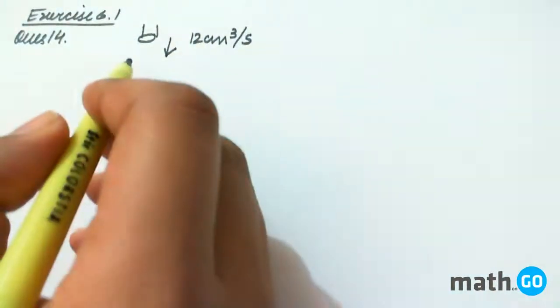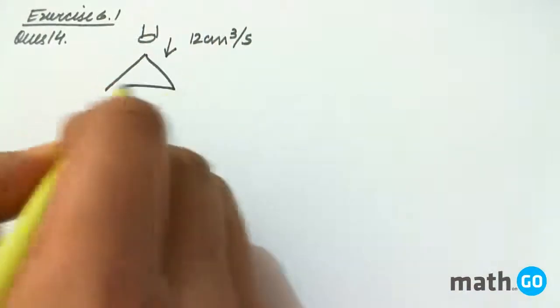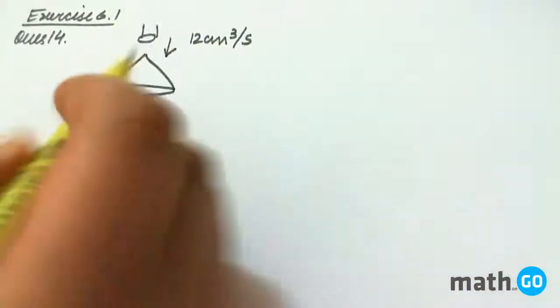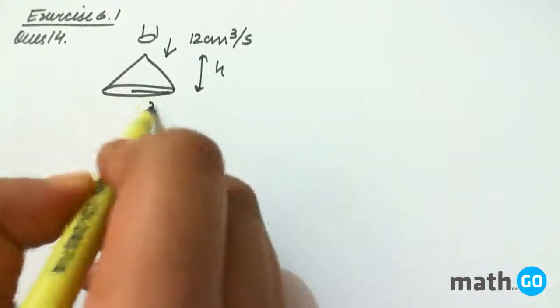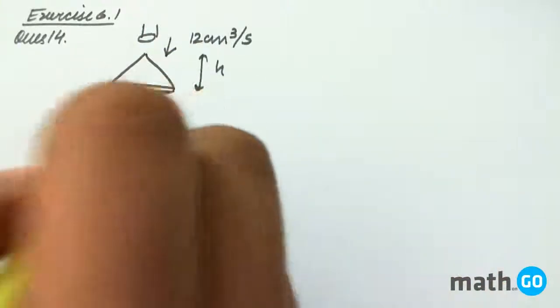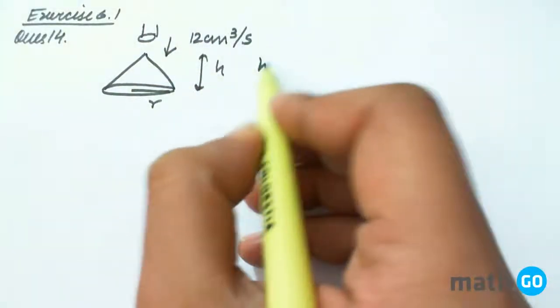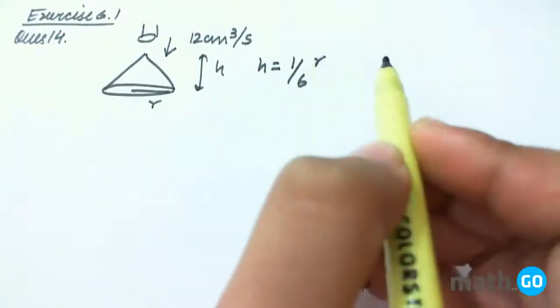The falling sand is making a cone, which height is H and the radius is R. So the question says the falling sand forms a cone such that height is always one sixth of the radius of the base.